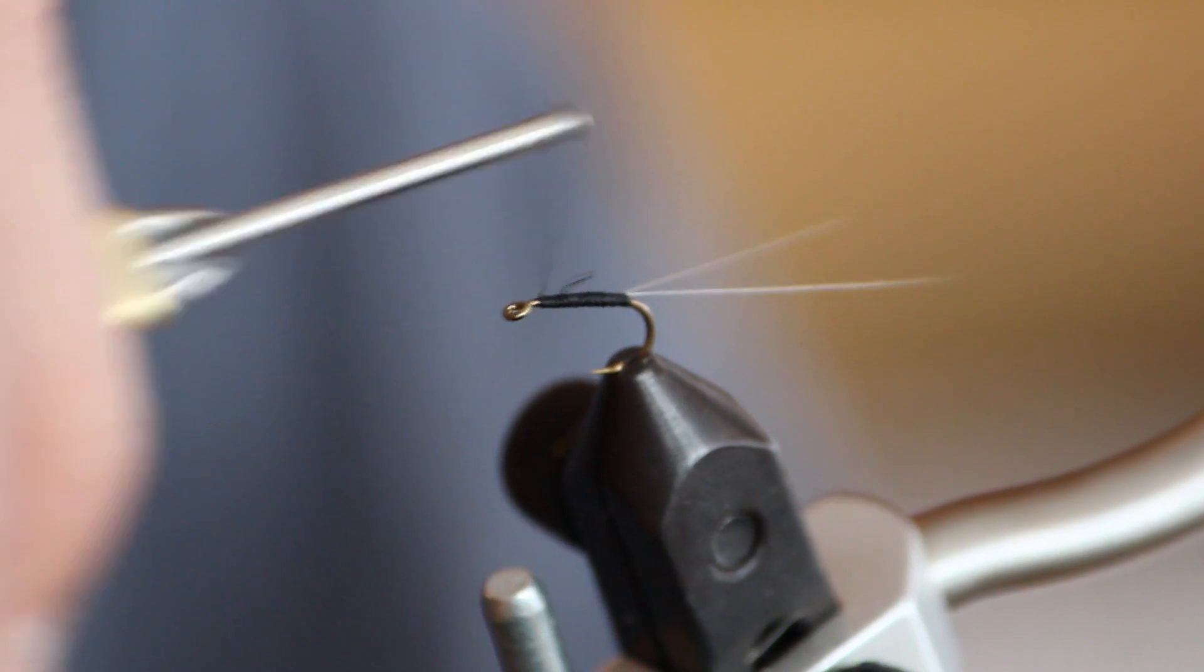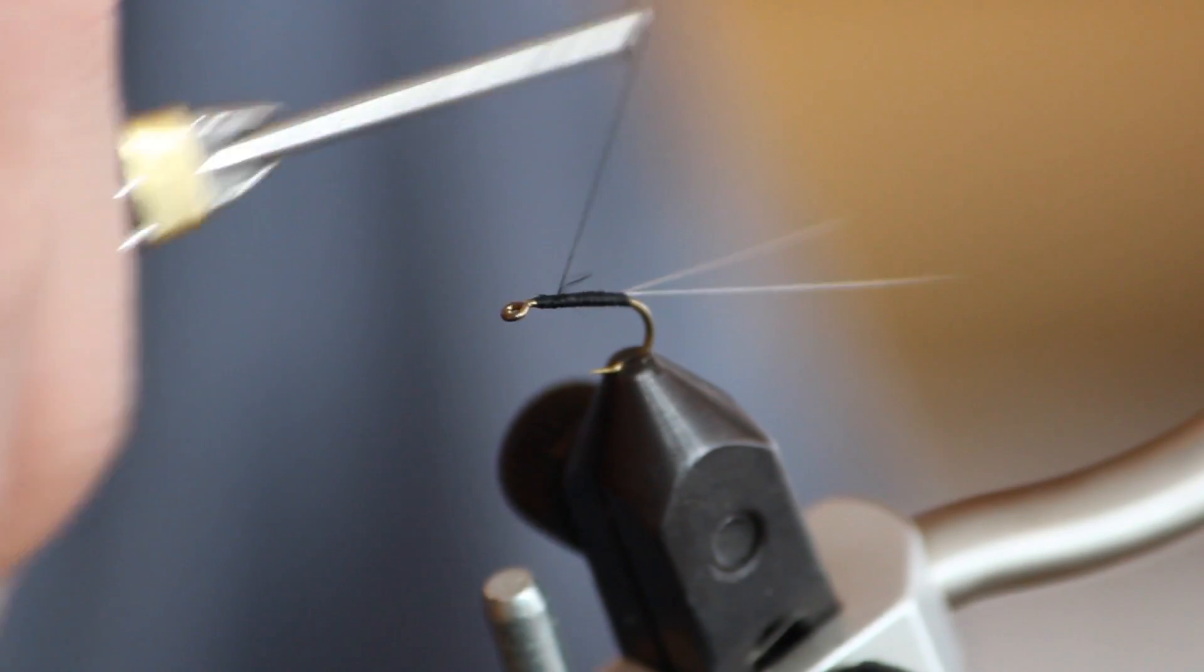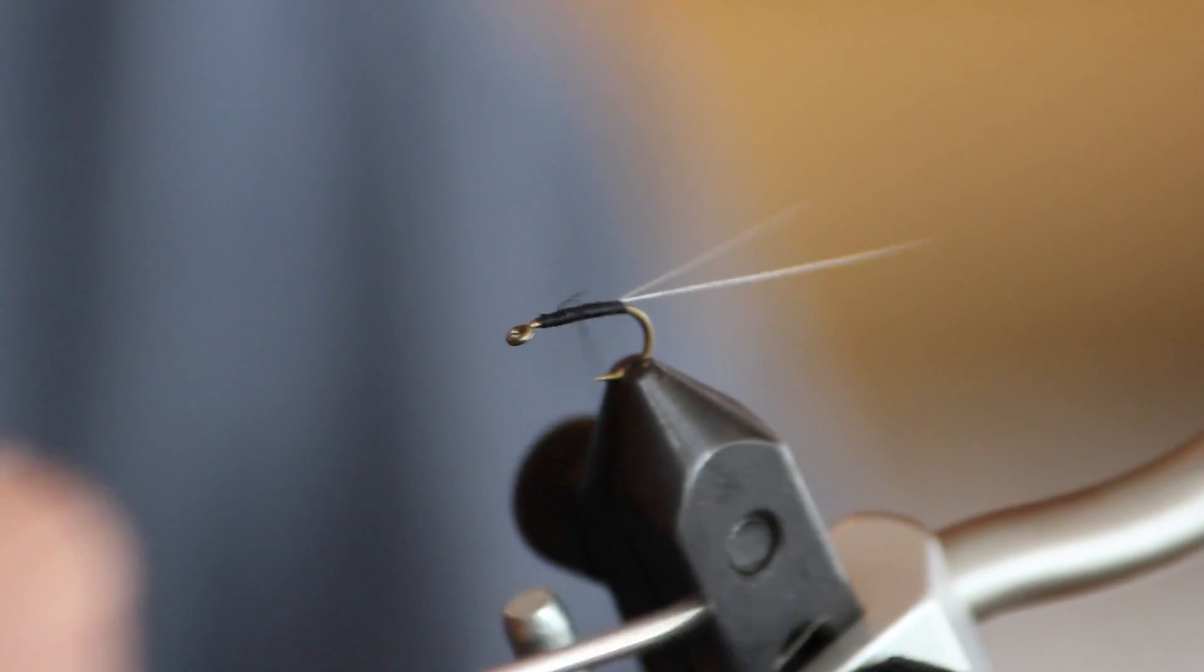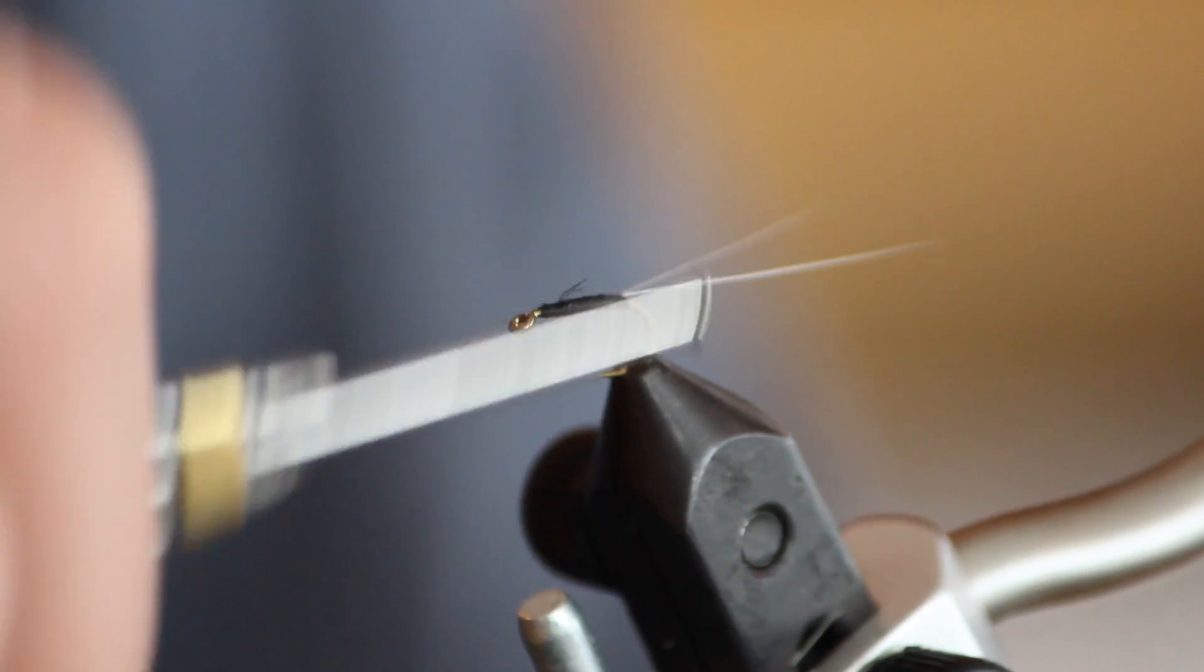Wrap several times just behind the eye of the hook to cover up any stubs or unwanted fibers. Then make wraps back towards the microfibbet.